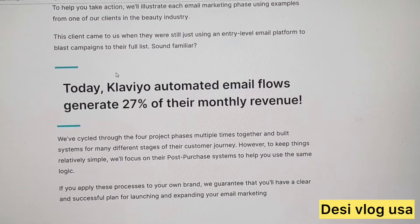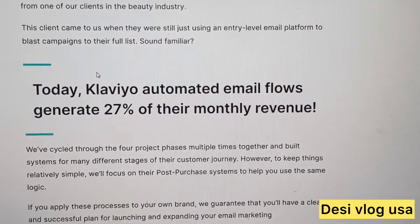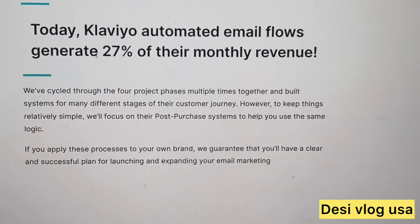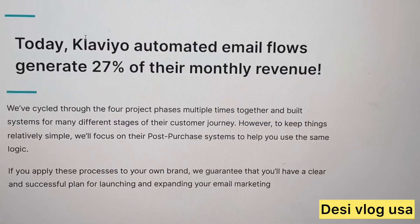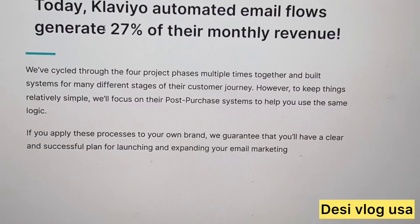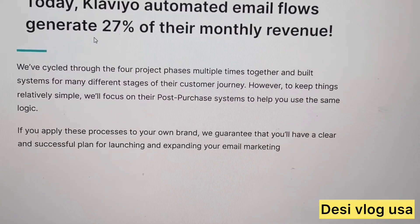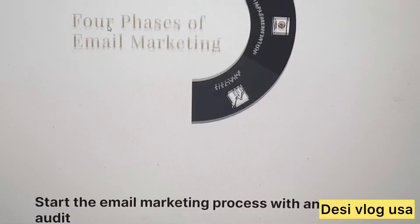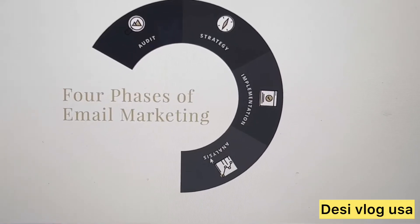For example, a client came to us using entry-level email. With Klaviyo, automated email flows generate 27% of their monthly revenue — so you're getting more revenue and more response out of the automated flows. These are the four phases: audit, strategy, implementation, and analysis.